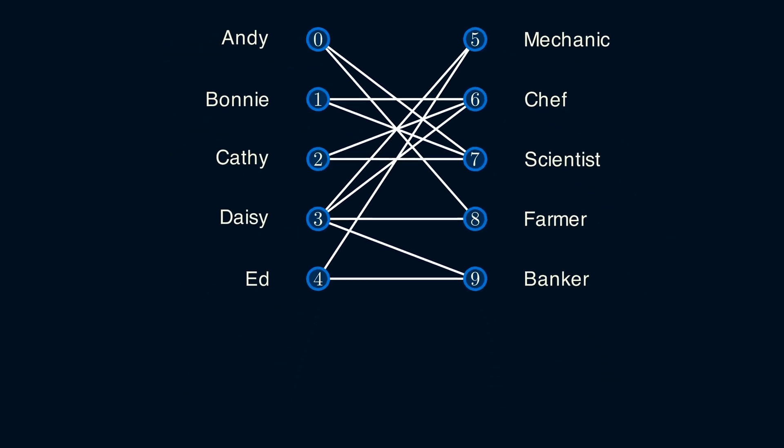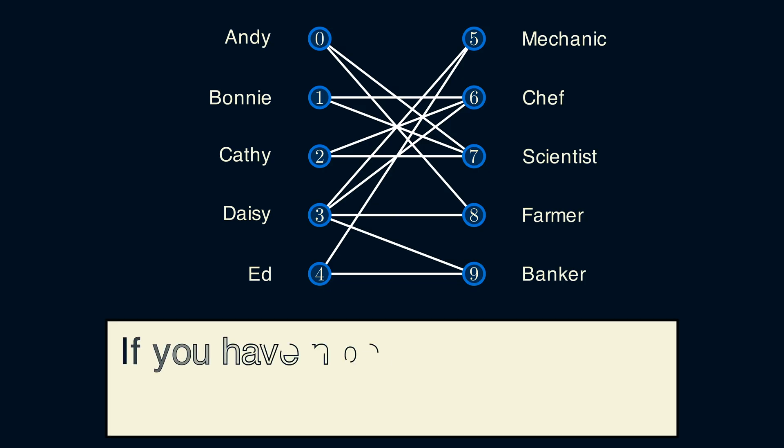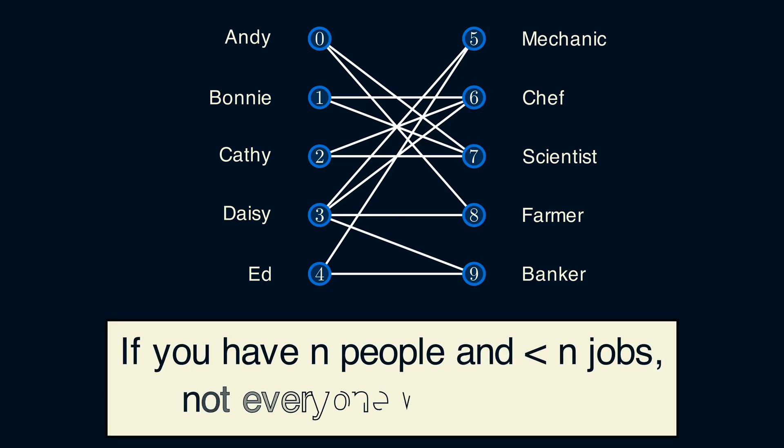In general, if you have n people and fewer than n jobs, at least one person will be unmatched. In mathematics, this observation is called the pigeonhole principle. It seems quite obvious, but it shows up a lot.